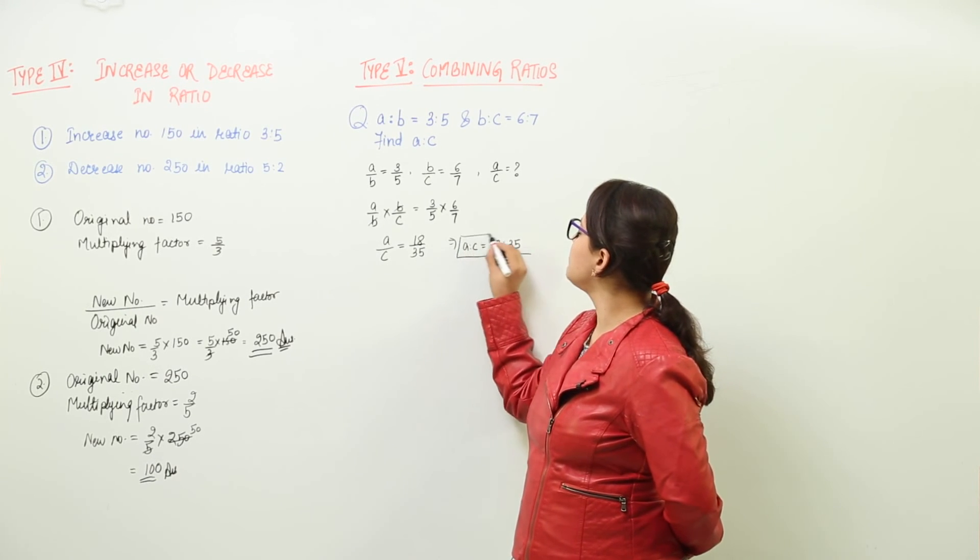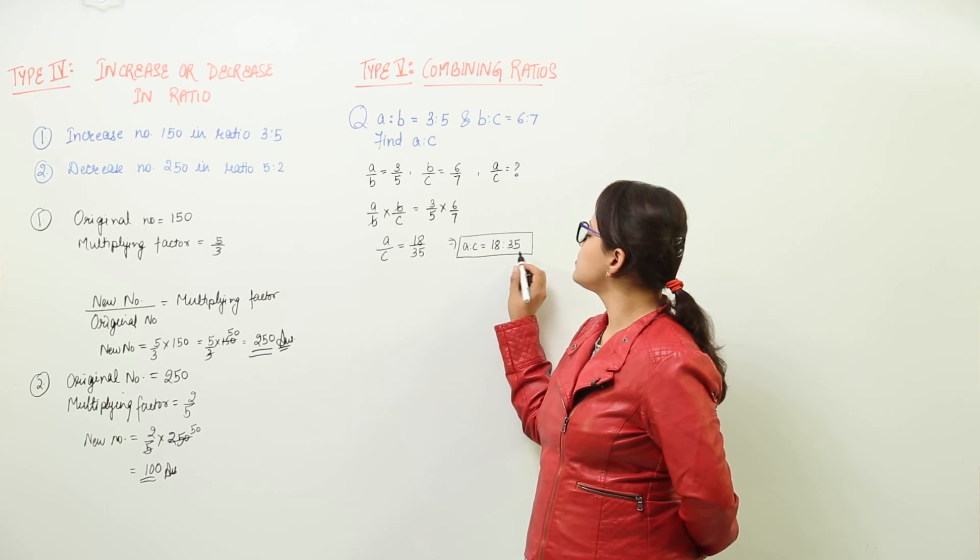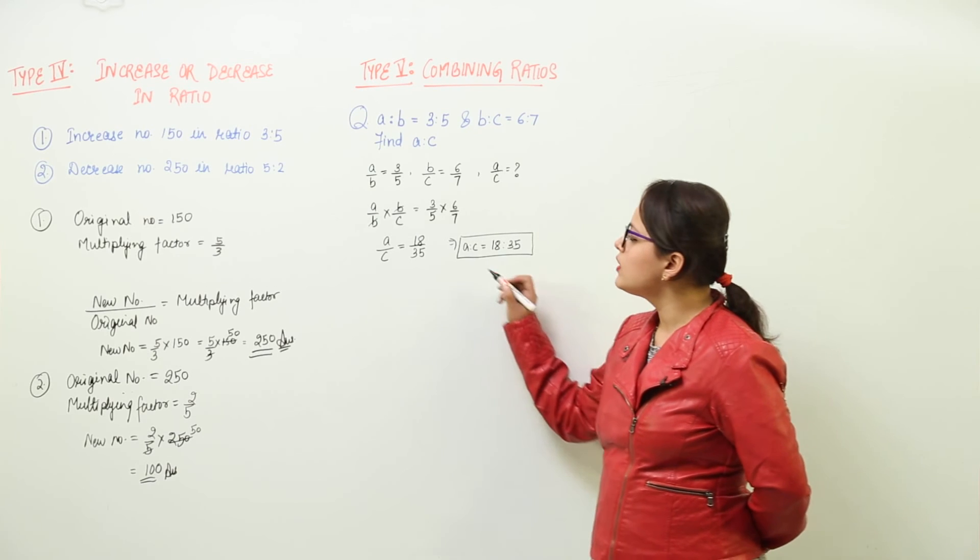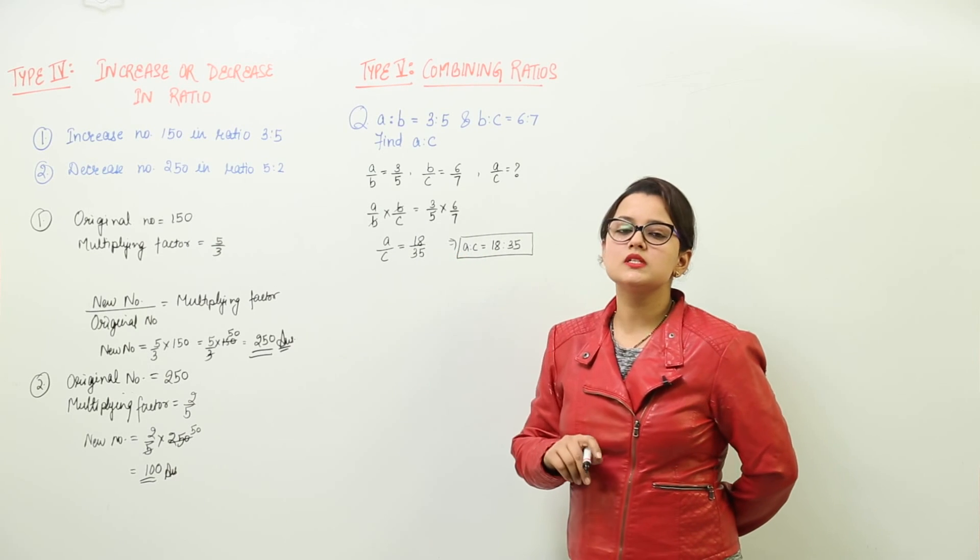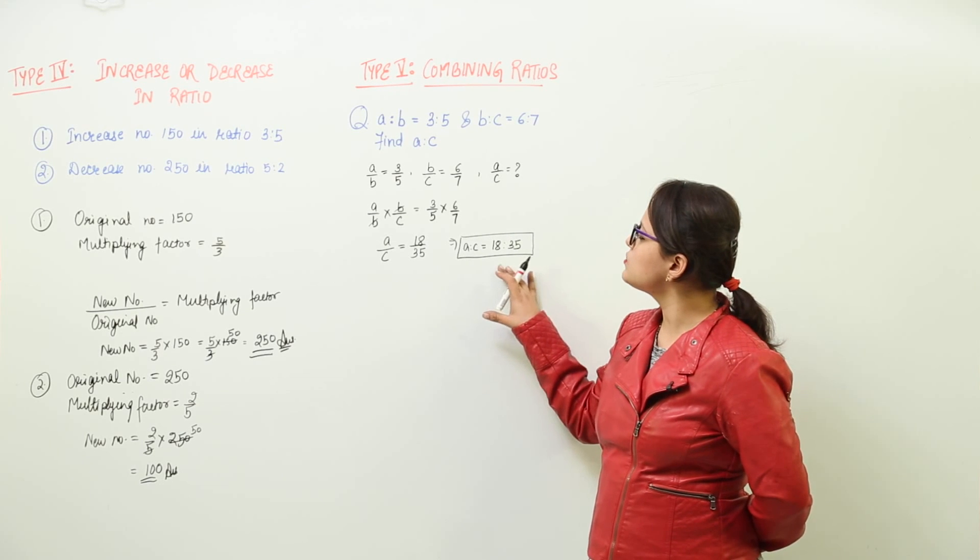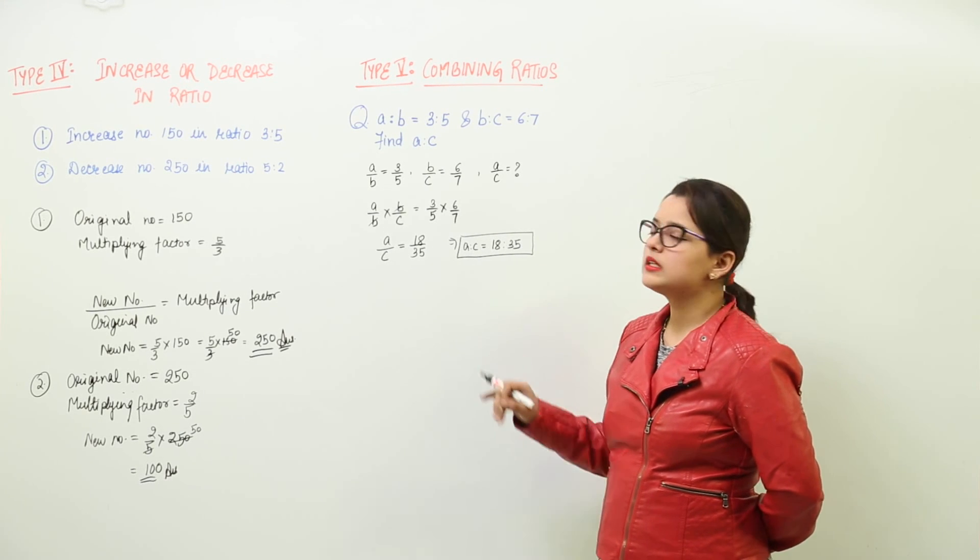And we know this is the simplest form because it has no other factor common than 1, or you can say the HCF of both numerator and denominator is only 1. So we can say that A is to C will be 18 is to 35.